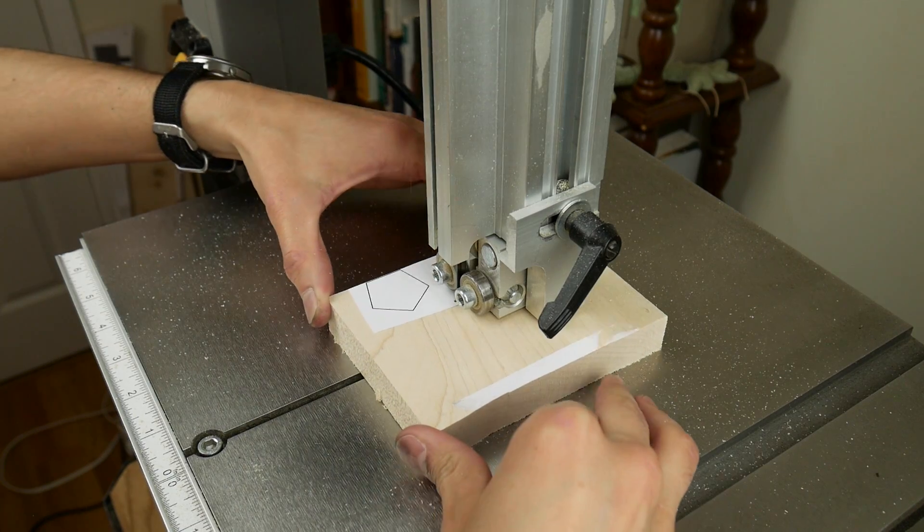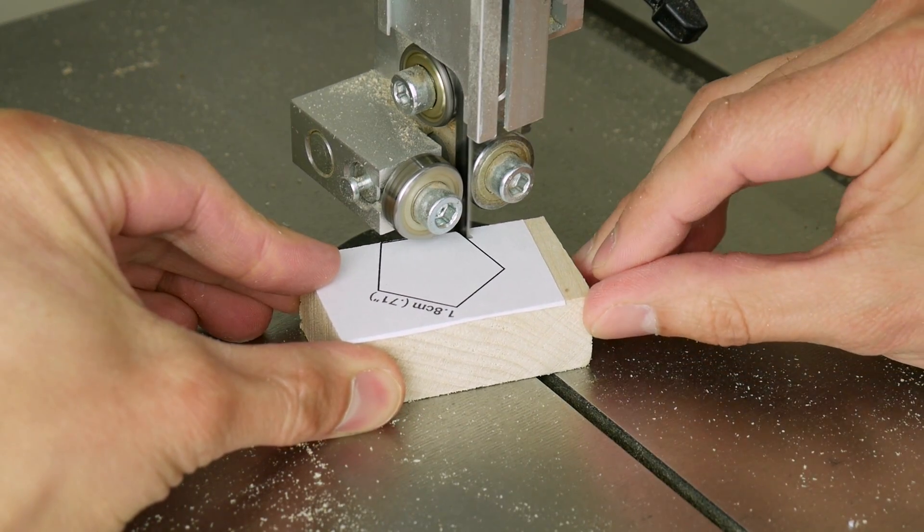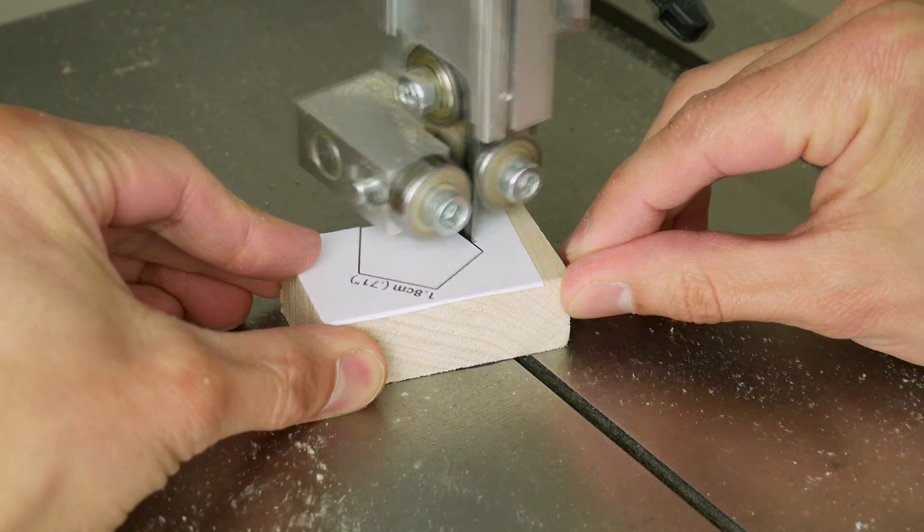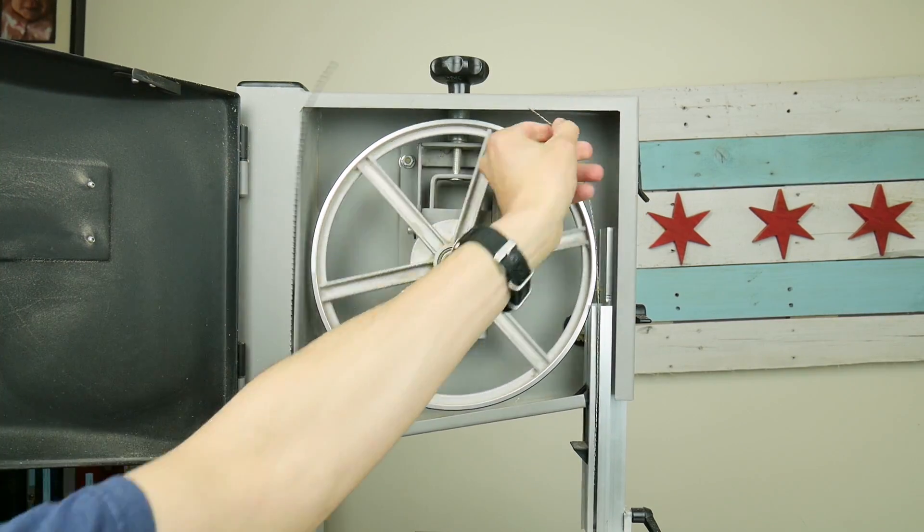Then I cut the pentagons out with a bandsaw. My cheapo bandsaw blade broke while I was cutting, so I had to order a new one. I got a much better one this time though.